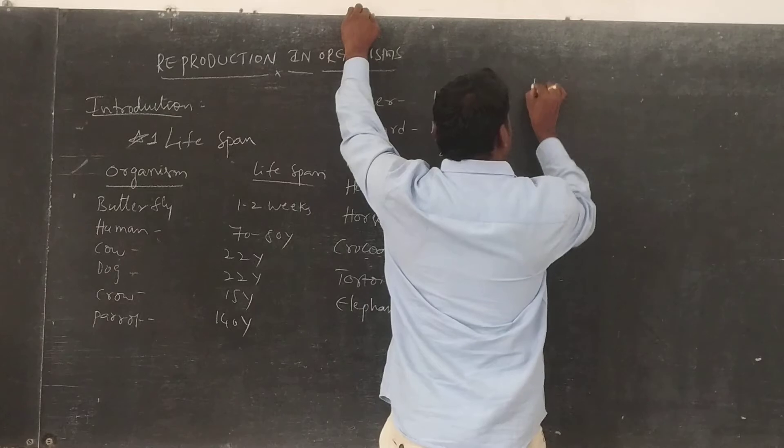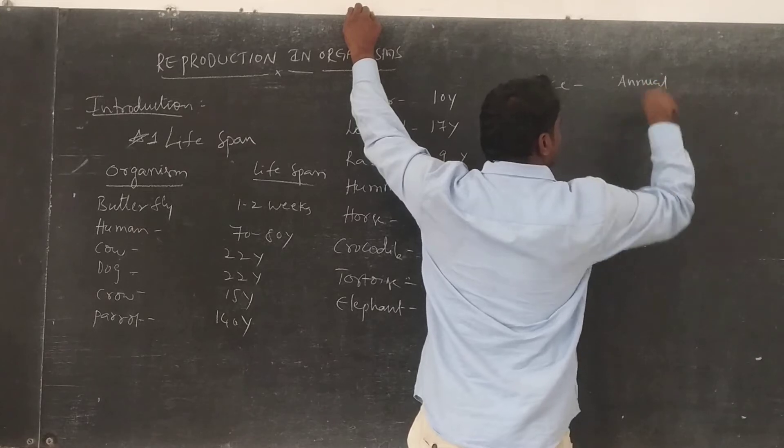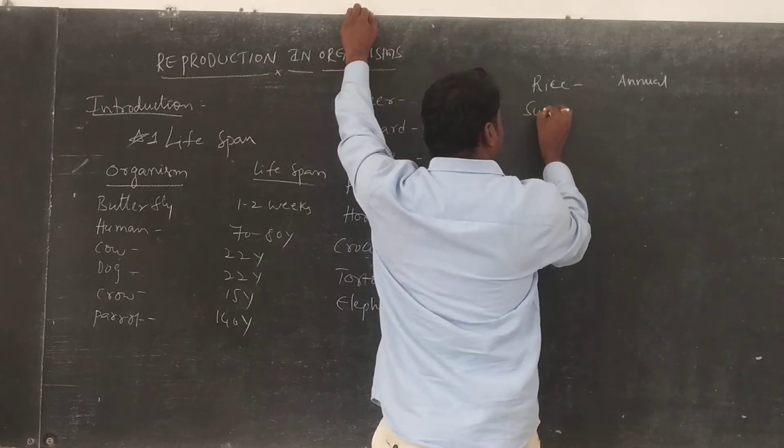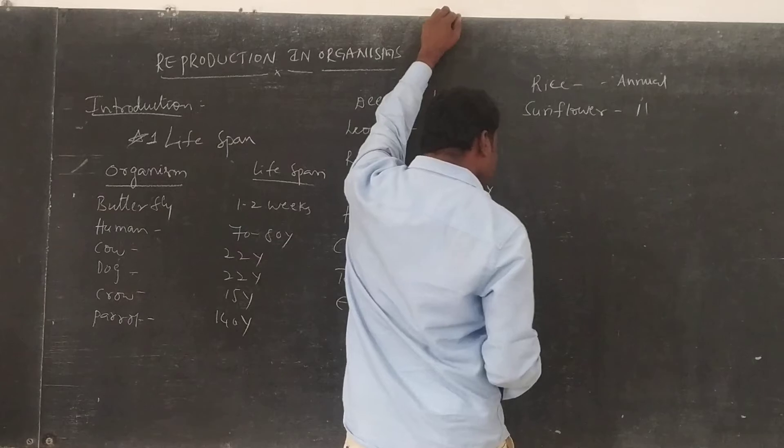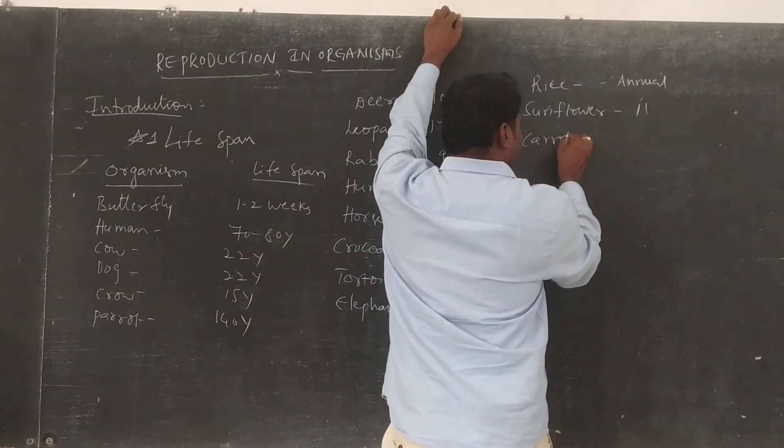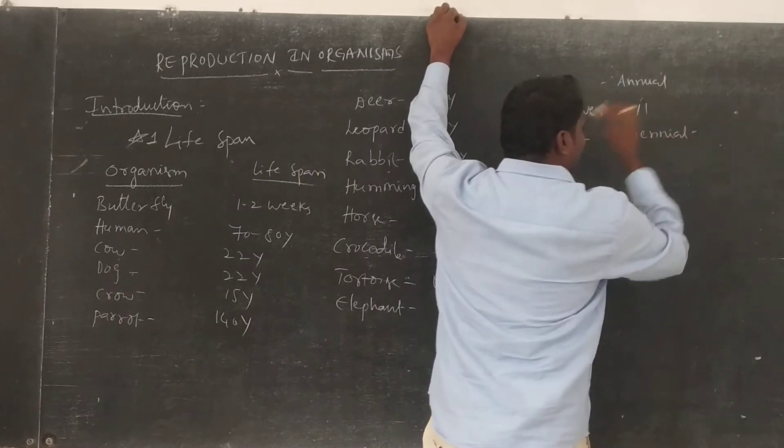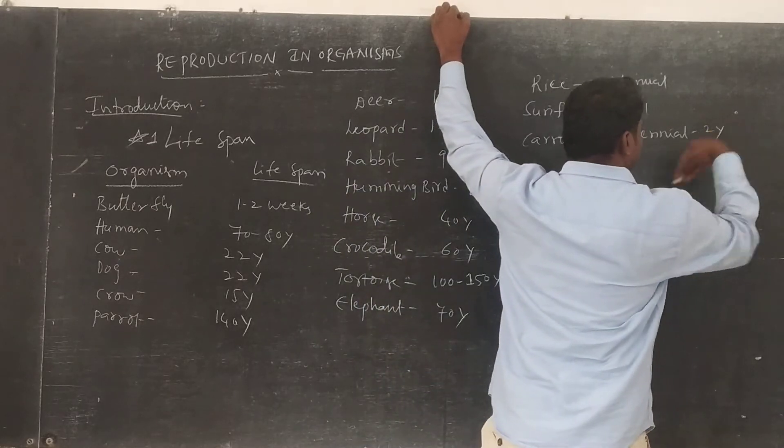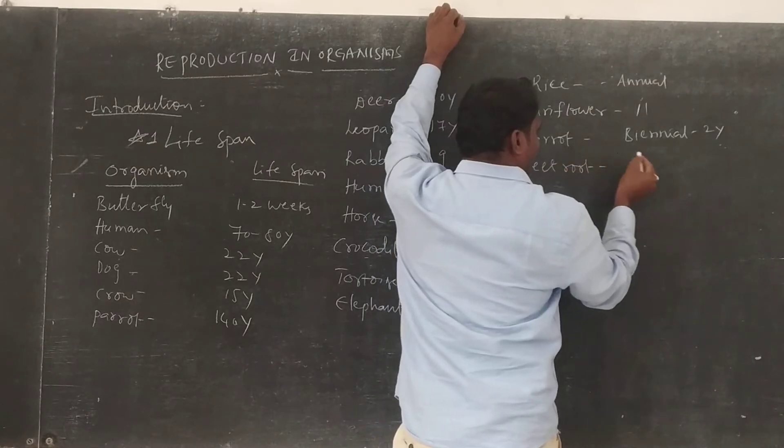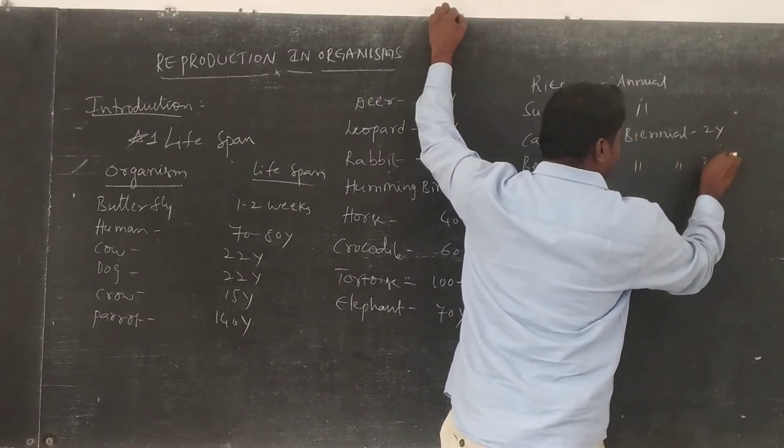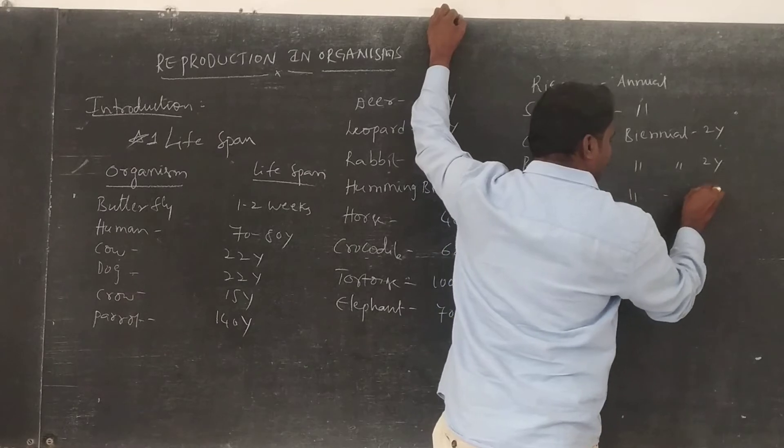And rice, rice is an annual plant, 1 year. Sunflower, annual plant, 1 year. Carrot, biennial plant, that means 2 years. Beetroot, biennial, that means 2 years. Radish, biennial, 2 years.